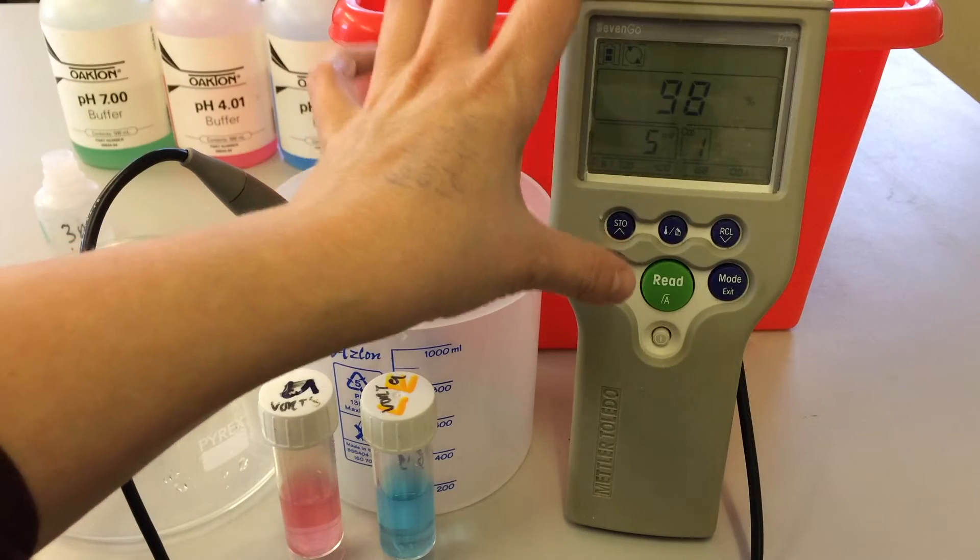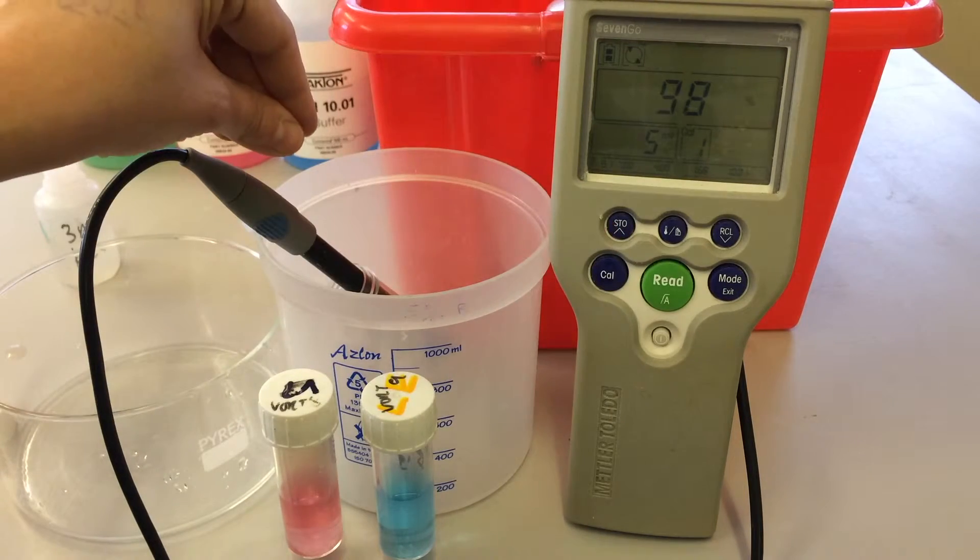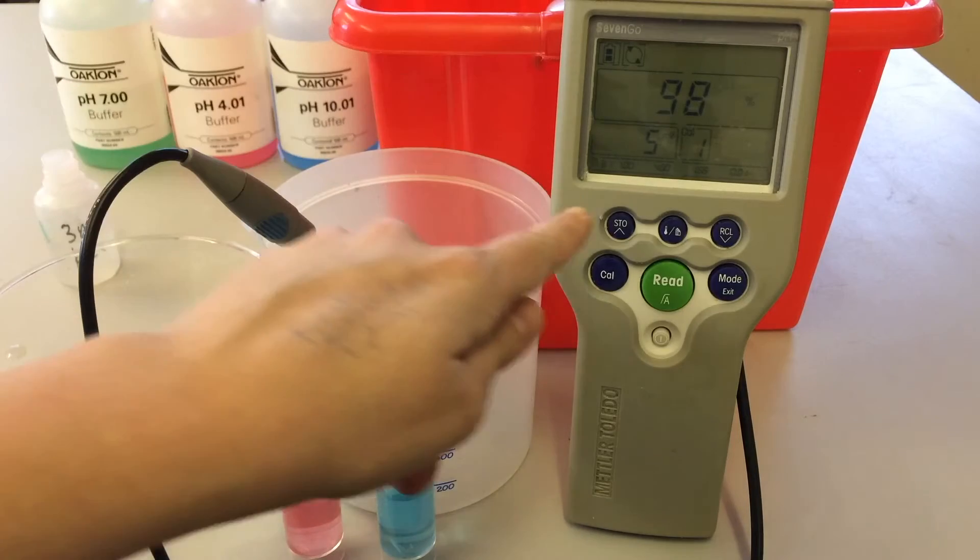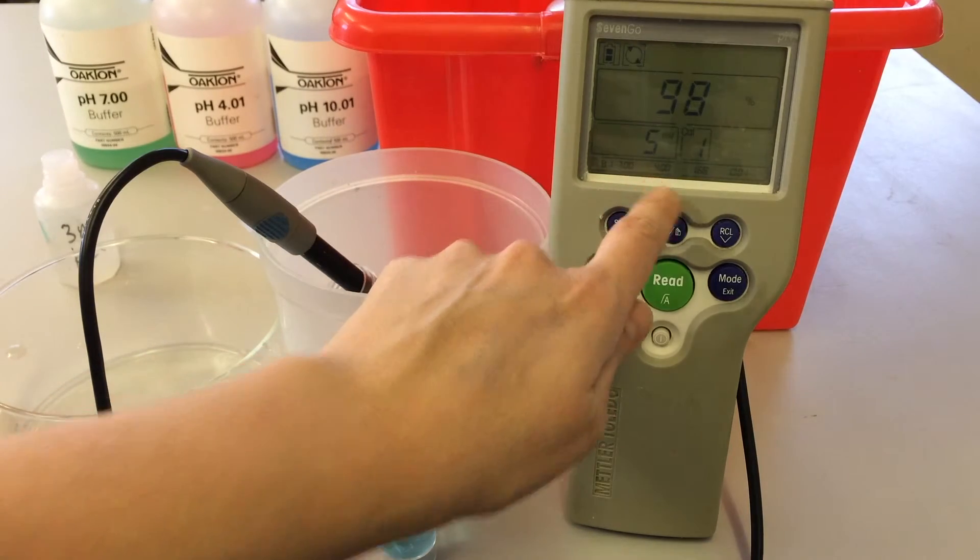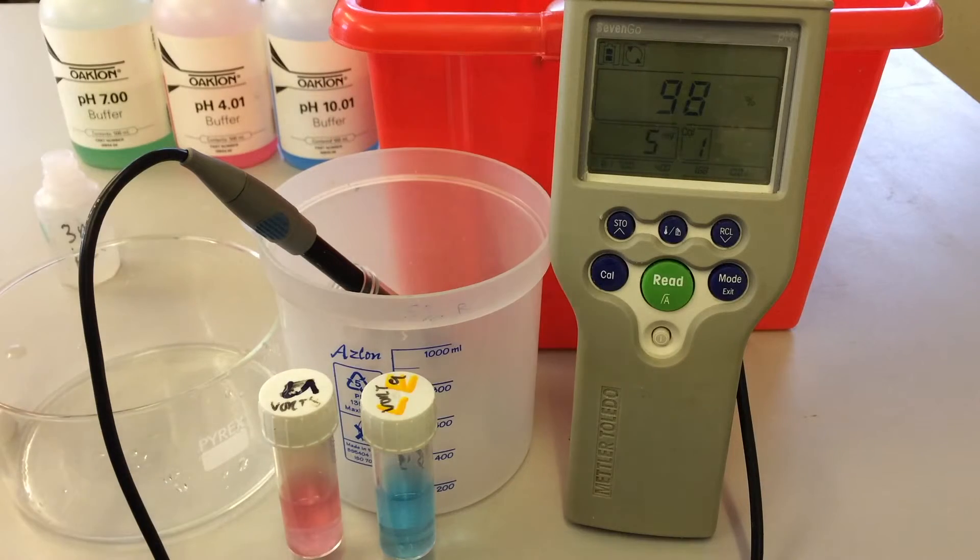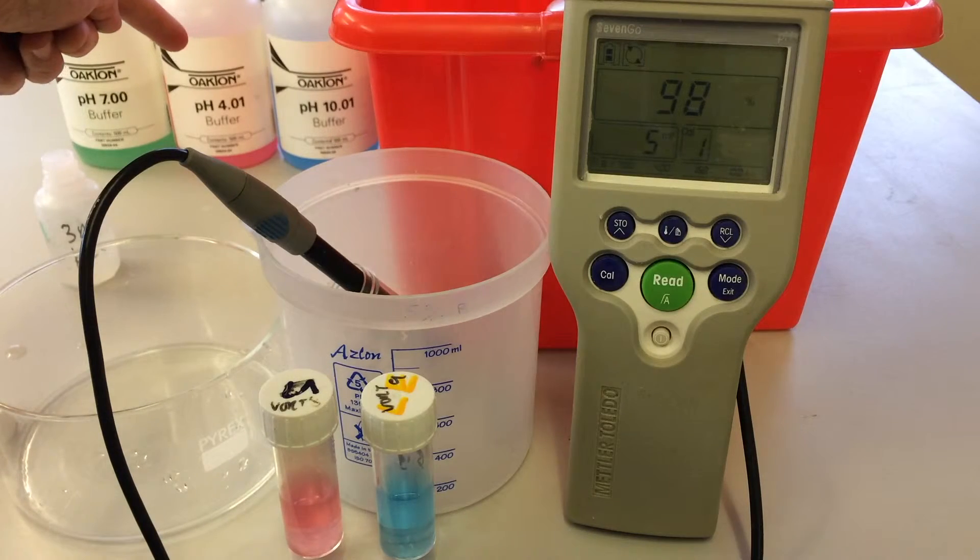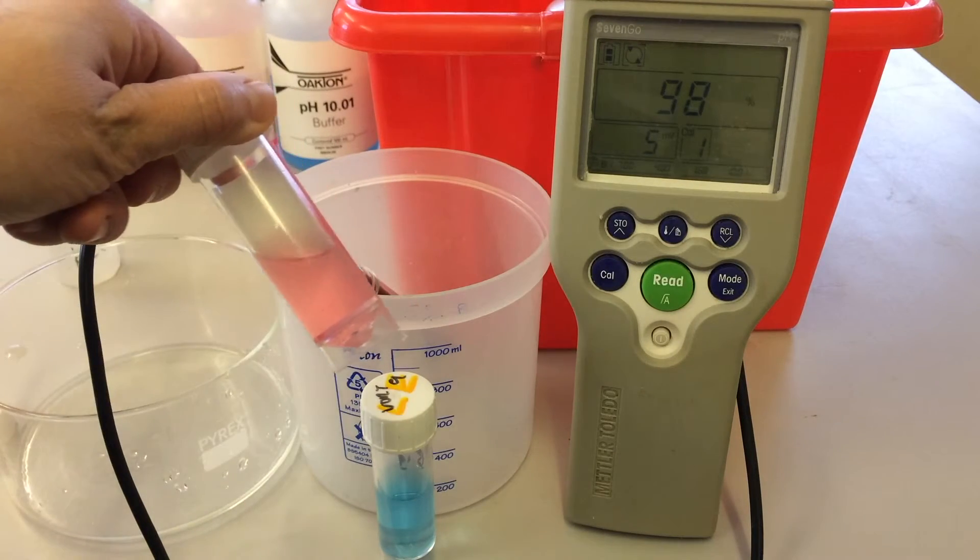So it's at this stage, once we get that percentage value, that we can now take this probe out of the buffer and take it to the next one. So remember I was talking about the order here, so we've done seven and now we're going to do four. So four is this pink one just here which I've already decanted into this little one.